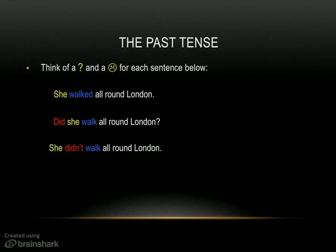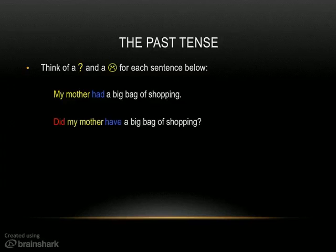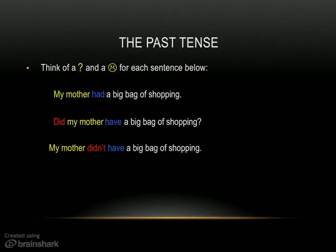And the next one: My mother had a big bag of shopping. This one was a bit harder, because you had to think of the irregular verb (onregelmatig werkwoord) 'hebben' — to have. My mother had a big bag of shopping — verleden tijd. Did my mother have a big bag of shopping? Het hele werkwoord 'hebben' is 'to have'. And the negative: My mother didn't have a big bag of shopping.